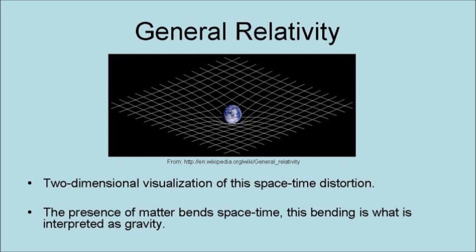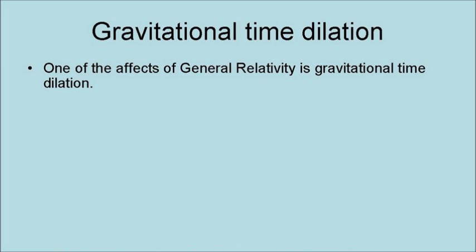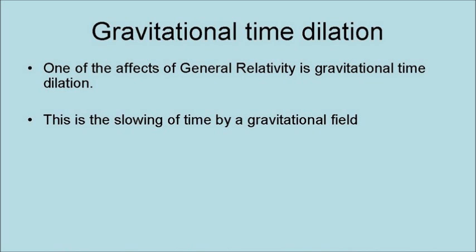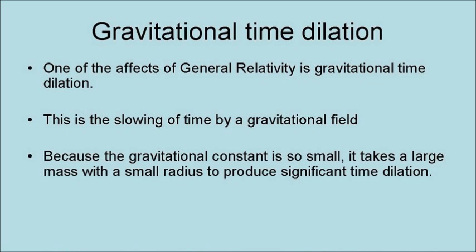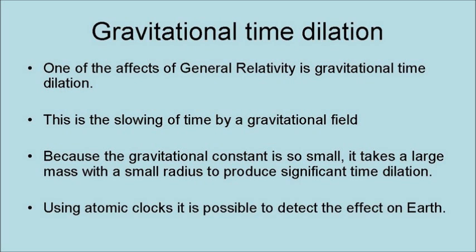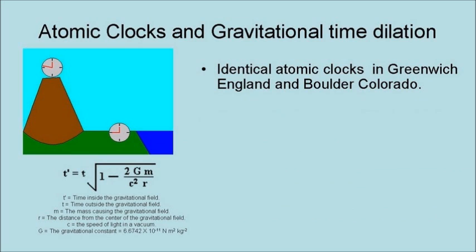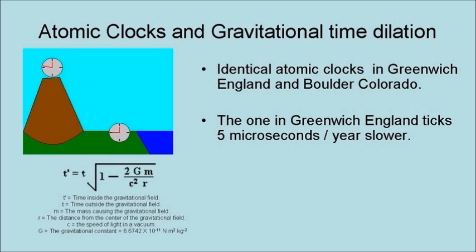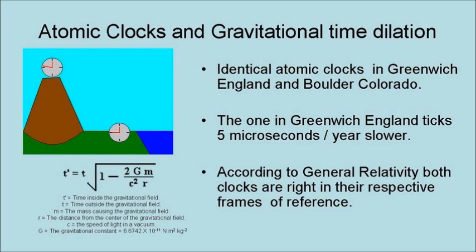The presence of matter bends spacetime, and this bending is what is interpreted as gravity. One of the effects of general relativity is gravitational time dilation. This is the slowing of time by a gravitational field. However, because the gravitational constant is so small, it takes a large mass with a small radius to produce significant time dilation. Using atomic clocks, it is possible to detect the effect on Earth. This involves identical atomic clocks in Greenwich, England and Boulder, Colorado. The one in Greenwich, England ticks 5 microseconds per year slower. According to general relativity, both clocks are right in their respective frames of reference.